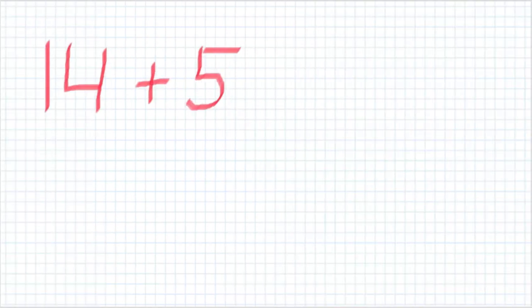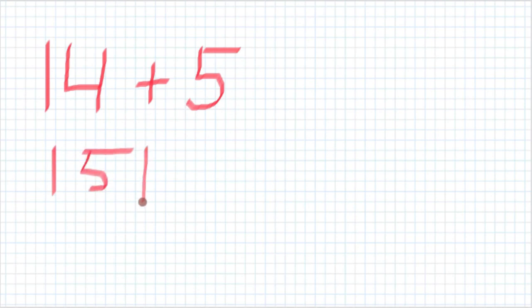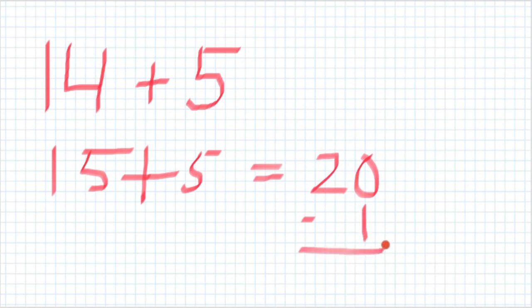Next up, 14 plus 5. Similar thing. Let's make that 15, plus 5, plus 5, and that is equal to 20. Again, this is one more, so we need to subtract one. Notice how I keep the ones lined up. So that's going to give us 19. Ask the student, or the student should be thinking about, what's the number just before 20? Because that's one less than 20. 19.